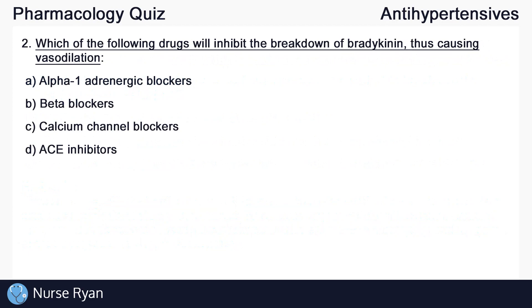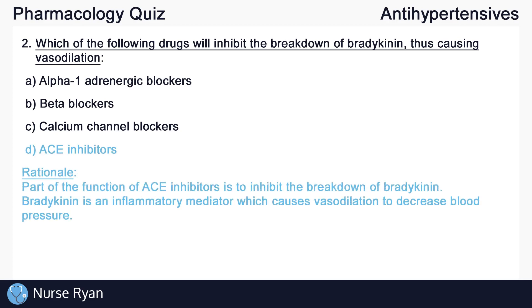Question number two: which of the following drugs will inhibit the breakdown of bradykinin, thus causing vasodilation? The answer here is D — ACE inhibitors. Part of the function of ACE inhibitors is to inhibit the breakdown of bradykinin. Bradykinin is an inflammatory mediator which causes vasodilation to decrease blood pressure.